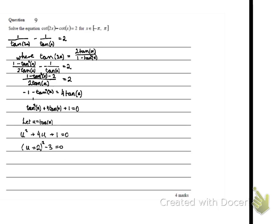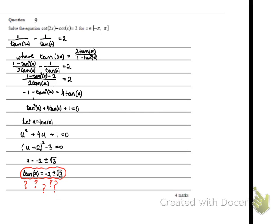Completing the square gives u = −2 ± √3. So tan(x) = −2 ± √3. But we can't evaluate that within any exact angle — we don't know the inverse tan of −2 ± √3. We've hit a dead end.